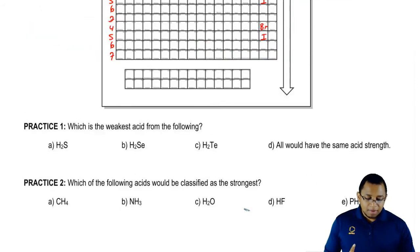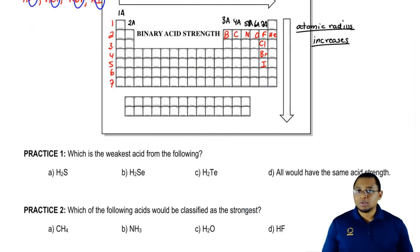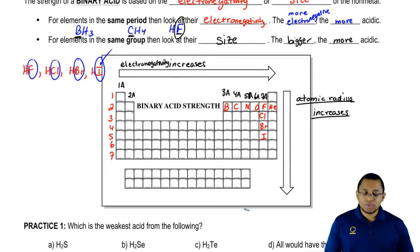Now one last thing before I let you guys attempt to do the two practice questions on the bottom. So the most common types of binary acids, we've already seen them. When H positive is connected to HF, we have HCl, HBr, HI. Group 6A would also be another common type of binary acids, H2S, H2Se, H2Te.